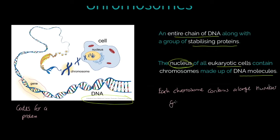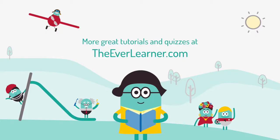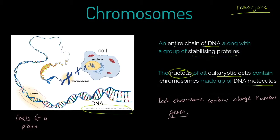In organisms, different genes will be turned on and off depending on where that chromosome, that nucleus, that cell actually is — which tissue is it living in, and therefore which proteins does it want to code for. Genes can be switched on and can be switched off.